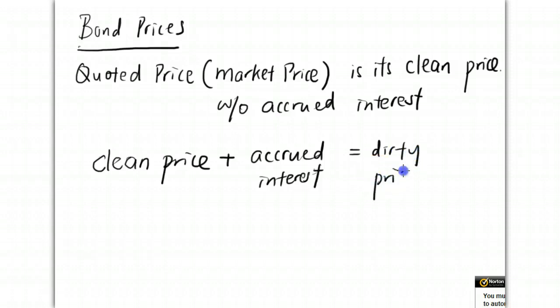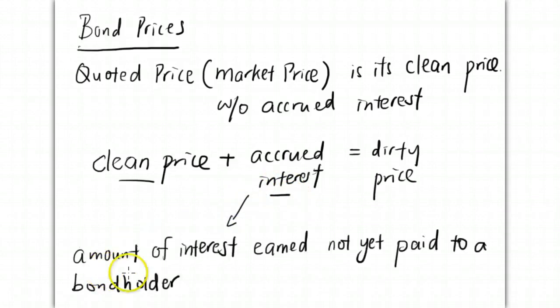The dirty price is the clean price plus any accrued interest. What is accrued interest? Accrued interest is the amount of interest earned and not yet paid to a bondholder.